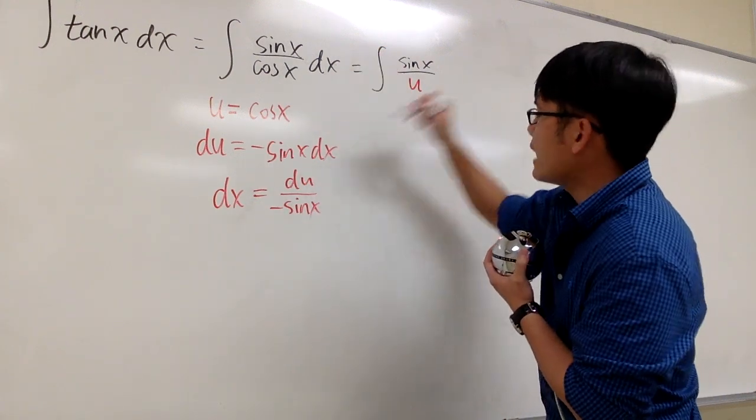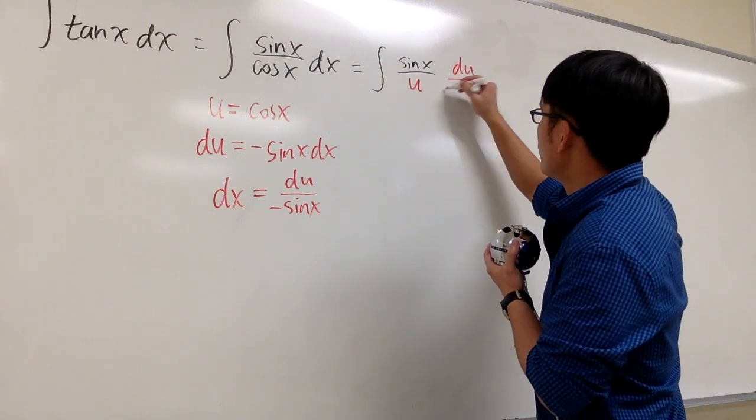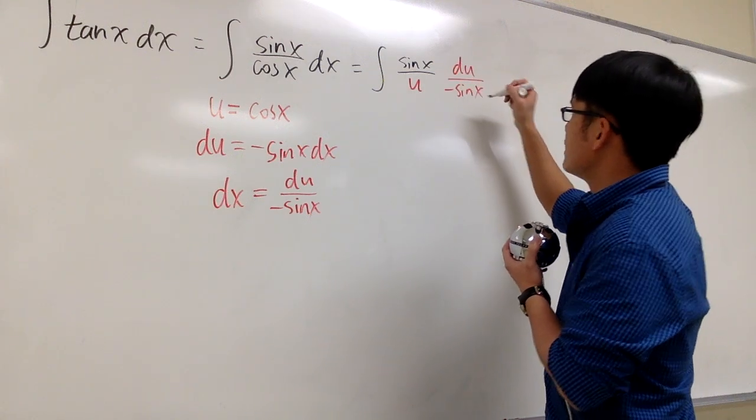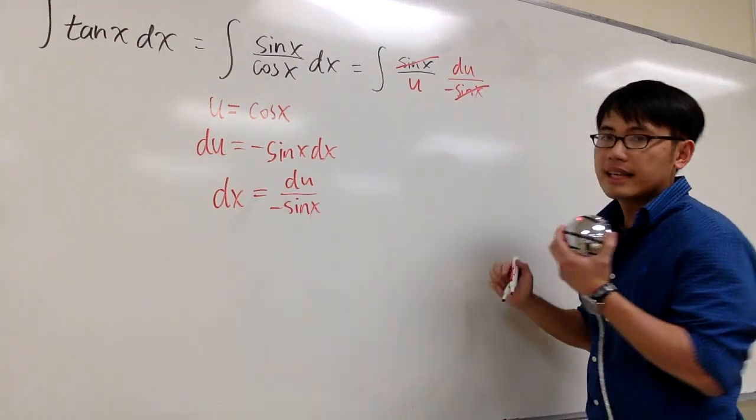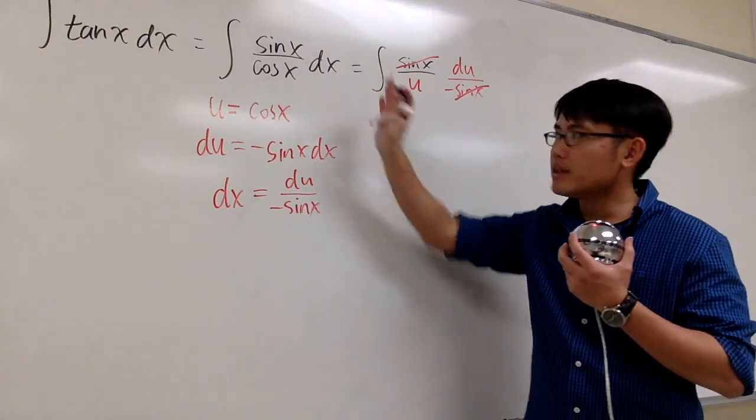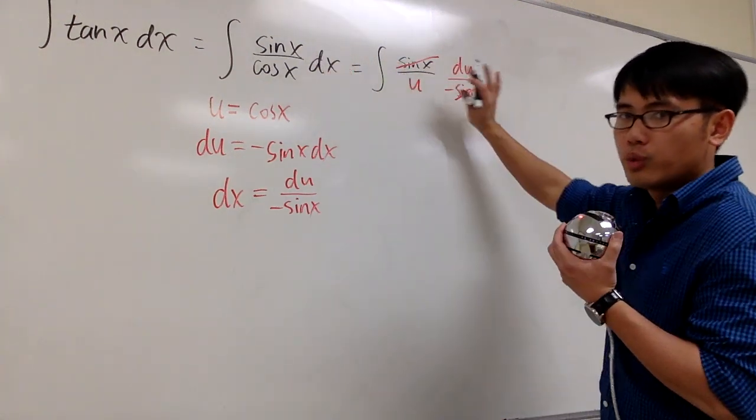And the dx is what we found to be du over negative sin x. So I will replace dx with that, du over negative sin x. And you see, this sin x and that sin x cancel each other out. So we brought this integral into the u world completely.